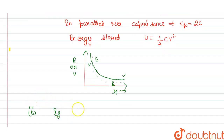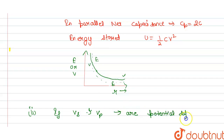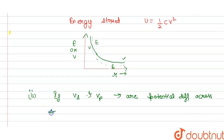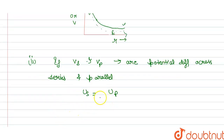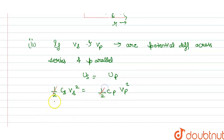Now solving the second part: let Vs and Vp be the potential differences across the series and parallel combinations respectively. We are given that energy stored in series equals energy stored in parallel. So we write: half times Cs times Vs squared equals half times Cp times Vp squared. The halves cancel out.